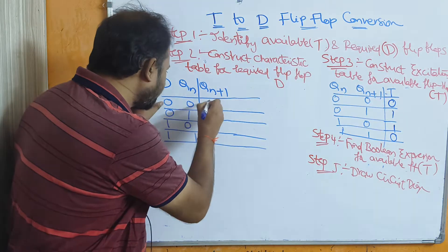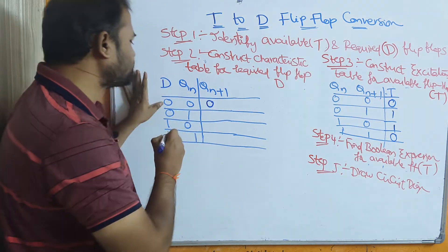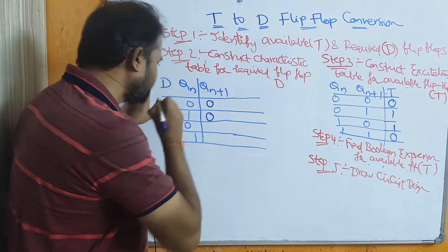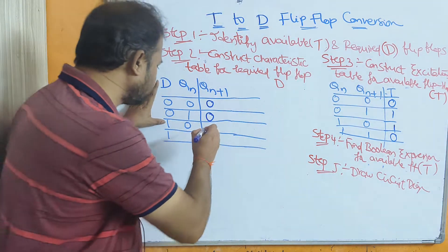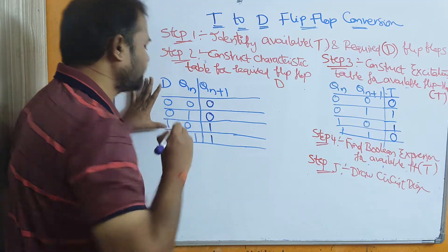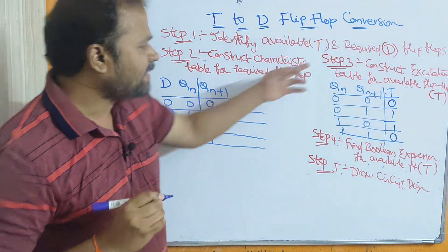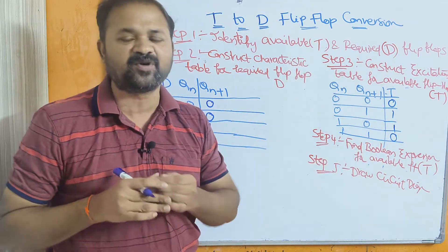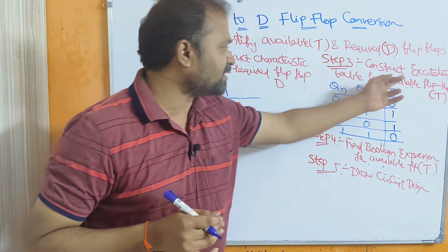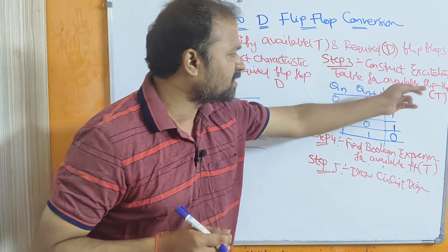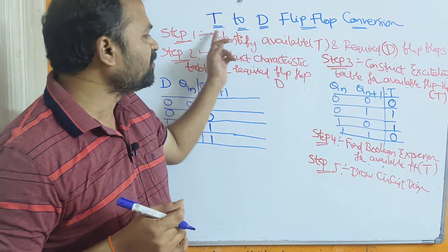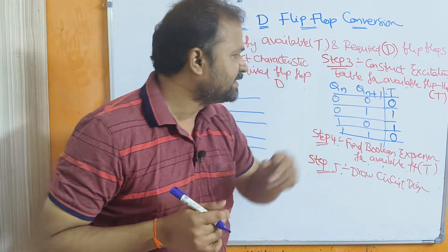So when D value is 0, the next state output is also 0. When D value is 1, the next state output is also 1. Now step 3 is to construct the excitation table for the available flip-flop, which is the T flip-flop.